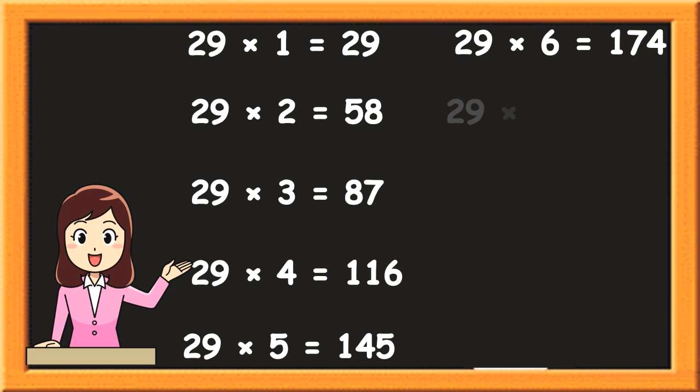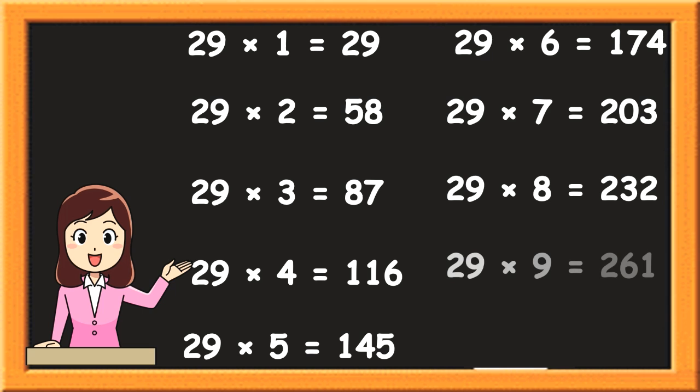29 7s are 203. 29 8s are 232. 29 9s are 261. 29 10s are 290.